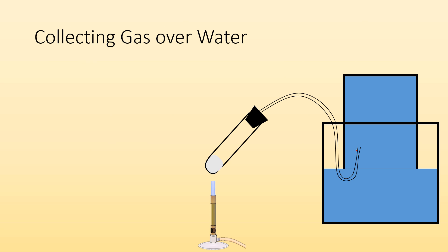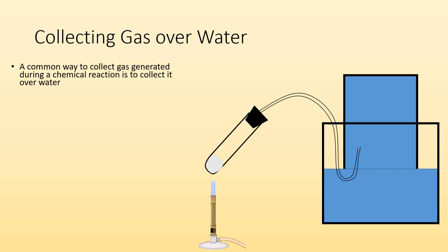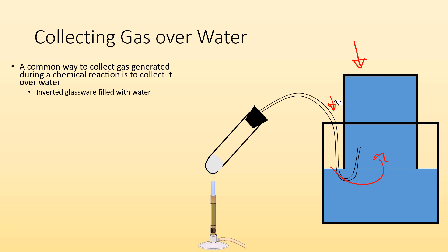Commonly, when we're trying to carry out a chemical reaction and collect a gas product, we're collecting the gas over water. We have some inverted glassware filled with water — a beaker filled with water and flipped upside down into a tub of water so the water stays in the beaker. The water doesn't fall because that would create a vacuum at the top, and atmospheric pressure pushes the water up to stay there.